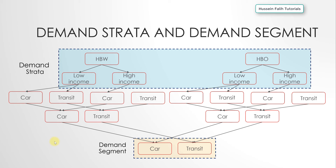One example of aggregation is when a model has no tolls, so income does not affect route choice — people with low and high income will use the same path. However, when tolls or other differentiating factors exist, aggregation is not a good idea. After aggregating, the demand strata and modes result in demand segments — car and transit — each with a matrix assigned to the road network.